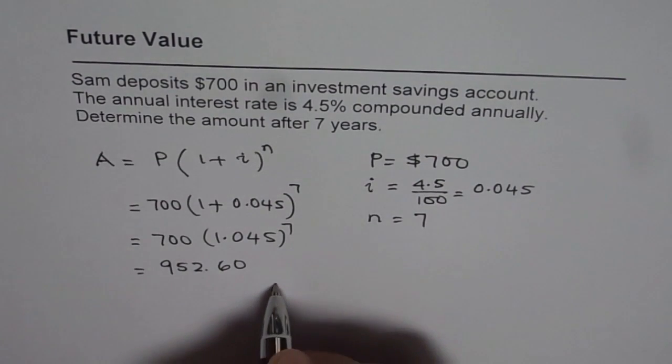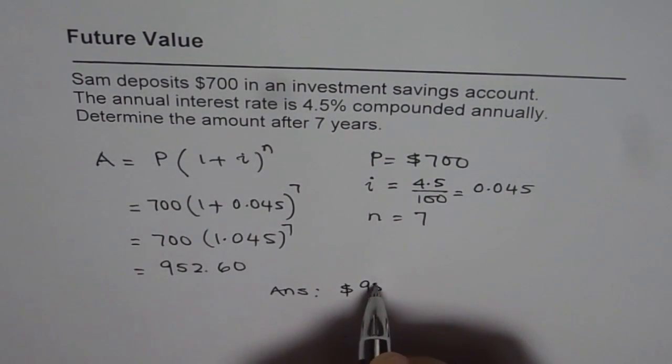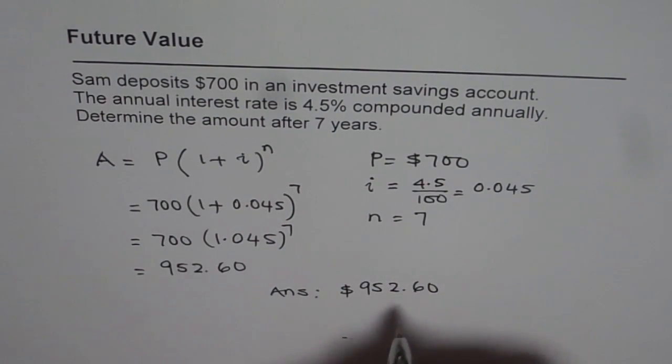So that is the answer. Our answer is $952.60. So $952.60 will be the amount after 7 years.